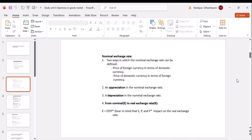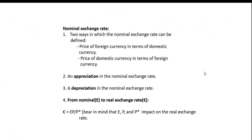We now move from the nominal exchange rate to the real exchange rate, which is a more effective tool. The formula to calculate the real exchange rate is: real exchange rate equals nominal exchange rate E times domestic price P divided by foreign price P*. This is how we move from the nominal to the real exchange rate.